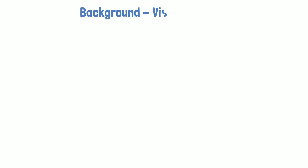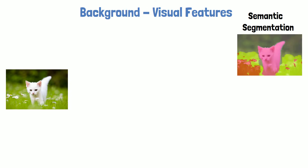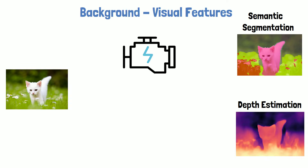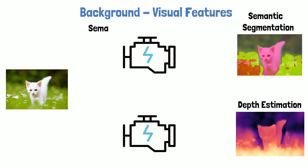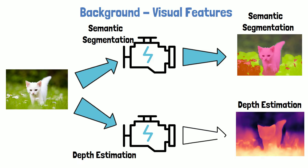Let's start with essential background knowledge about visual features. Say we have multiple tasks we want to solve — for example, given an image of a cat, we want to have a segmentation of that image, meaning categorizing related parts. We also want to do depth estimation, where we estimate the depth of different parts in the image. One way of achieving both goals is to train two models: one dedicated for semantic segmentation and another for depth estimation, each fed with the cat image and outputting results for the specific task.